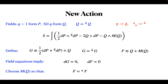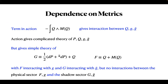The new action has the same equations as Sen's but with η replaced by ḡ everywhere. So the metric ḡ occurs here, G is self-dual with respect to ḡ, F is self-dual with respect to the physical metric, and these equations follow from the field equations, again implying local potentials. This term in the action gives an interaction between Q and the two metrics. The action gives a complicated theory for Q, P, and the two metrics, but gives a simple theory for capital G and capital F, where F interacts with little g and big G interacts with little ḡ, with no interactions between the physical sector and the shadow sector.